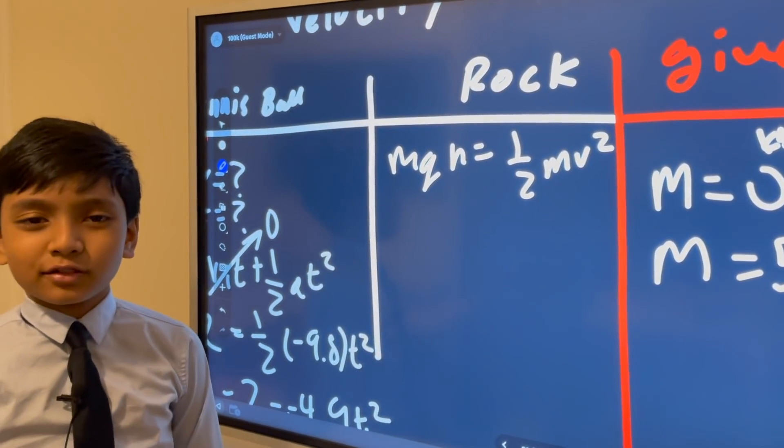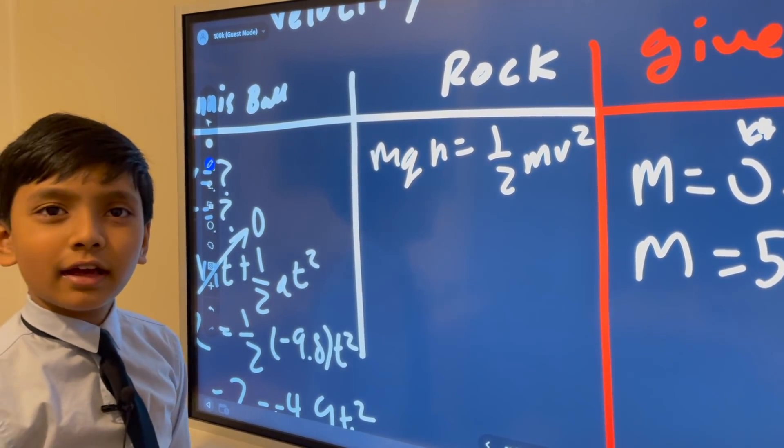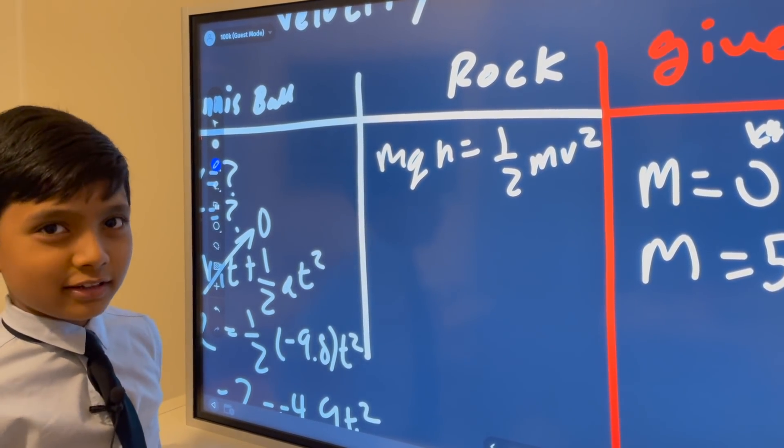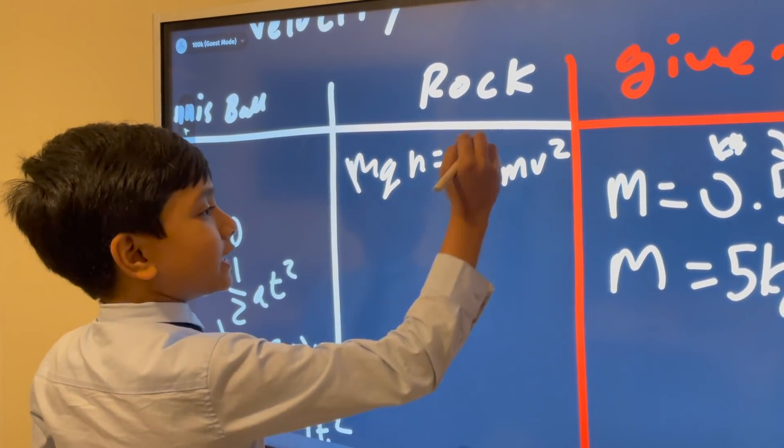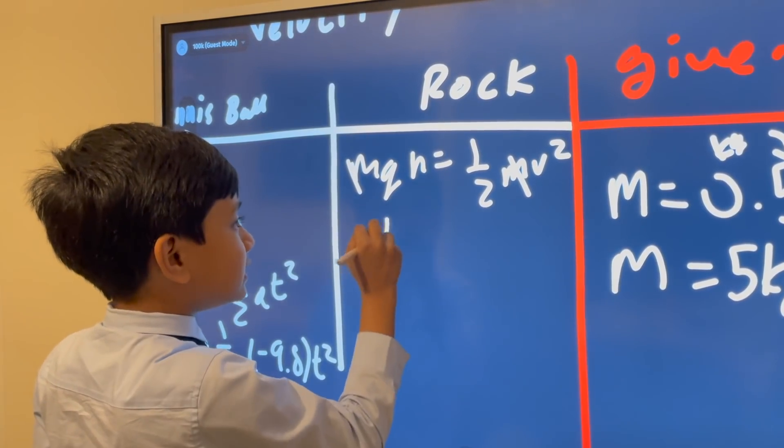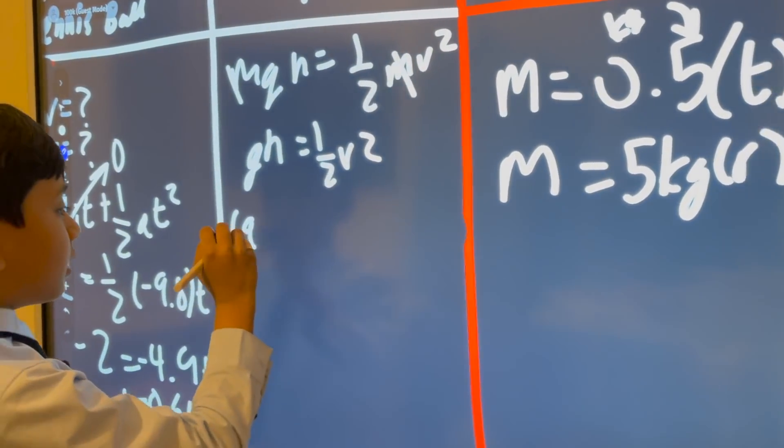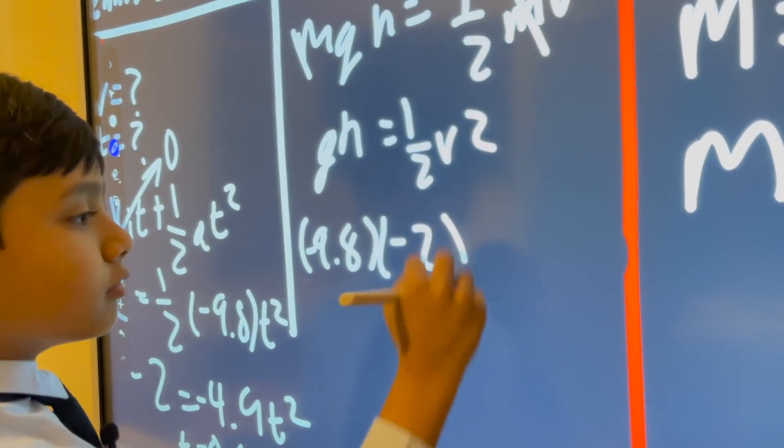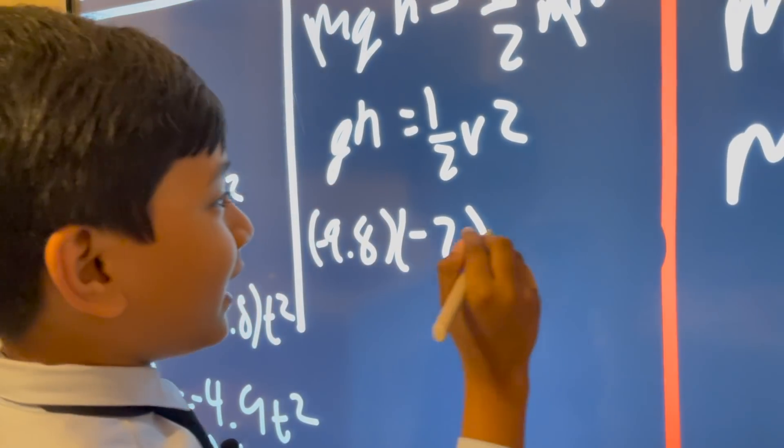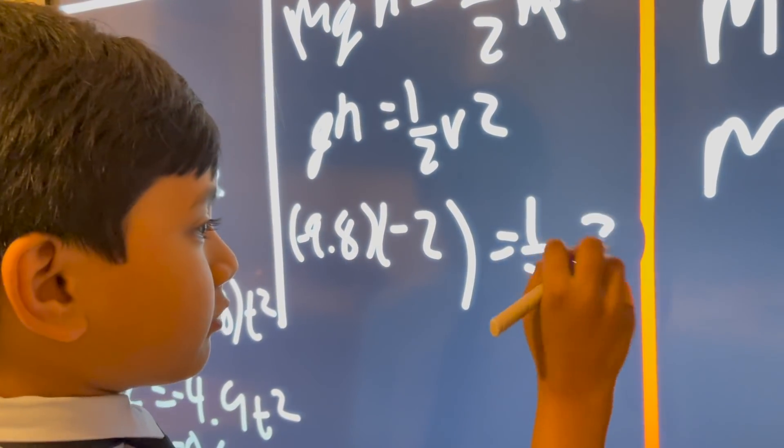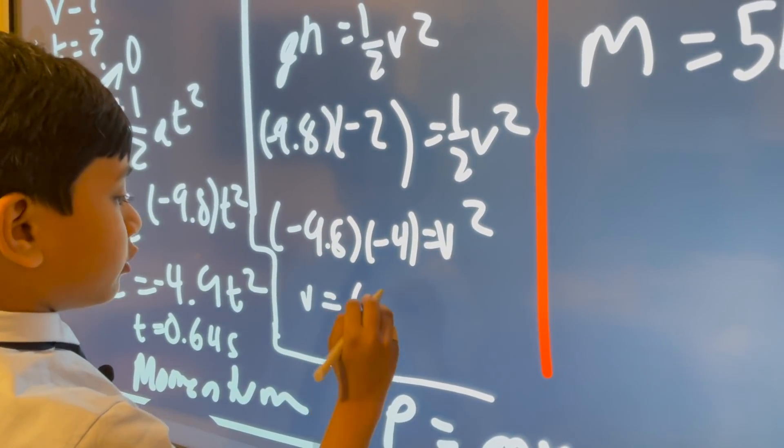M g h is potential energy, at least for earthly beings. And half m v squared is kinetic energy. Cancel, cancel. G h equals half v squared. Let's plug in everything. Nine point eight, minus two, which means the minus cancels out. And then half v squared. So that means six point two six.